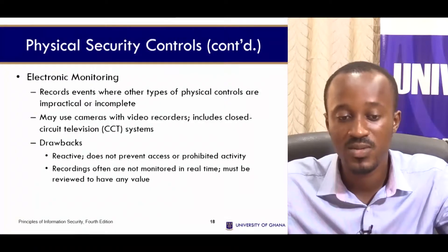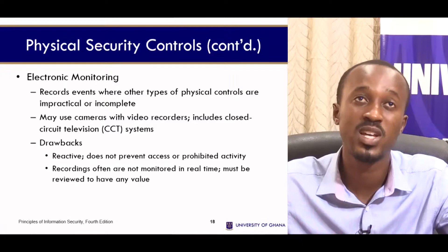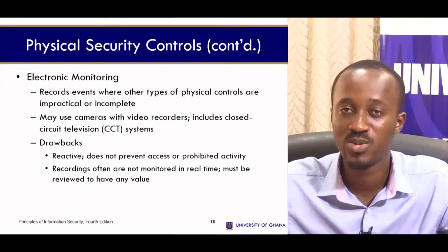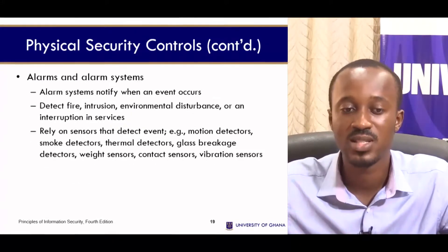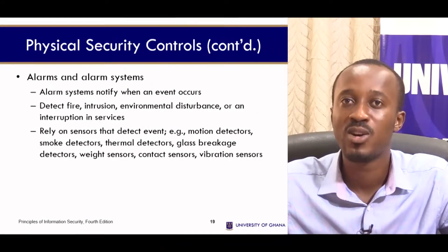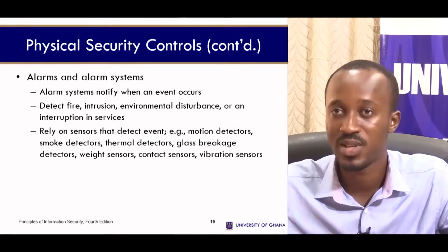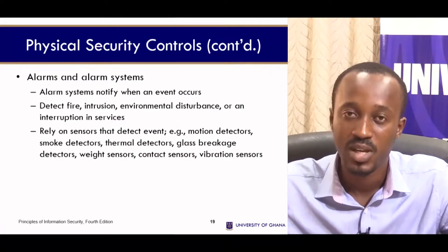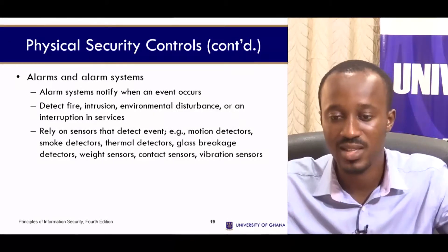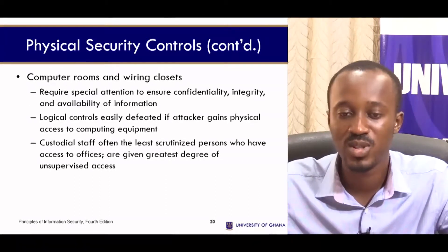Electronic monitoring includes CCTV cameras, which do not necessarily prevent access but give you the ability to monitor who has entered the facility, who is not authorized, and who is authorized. Alarm systems are set in places where unauthorized persons trigger an alert, causing security personnel to respond. Sensors include motion sensors, smoke detectors, and temperature detectors.